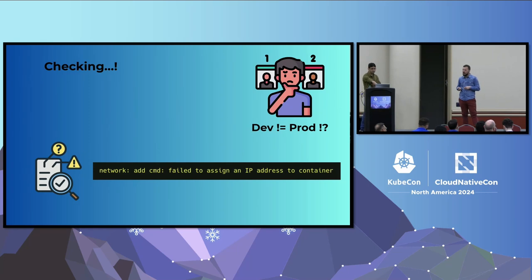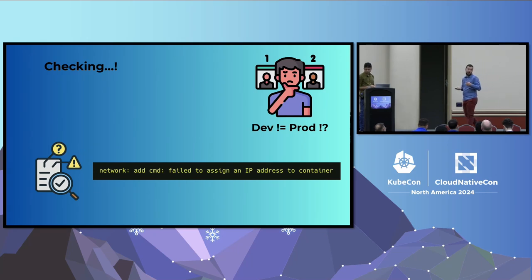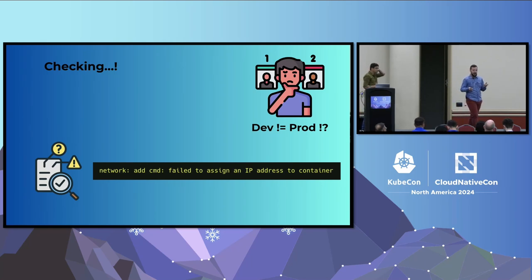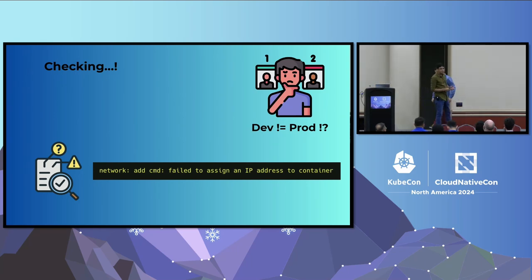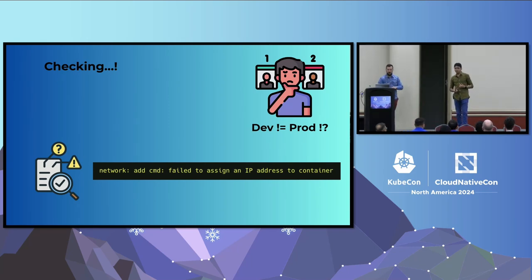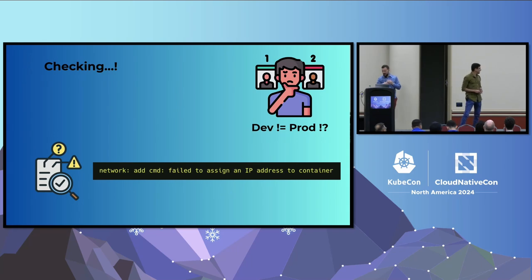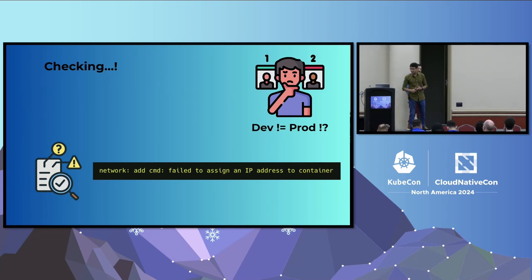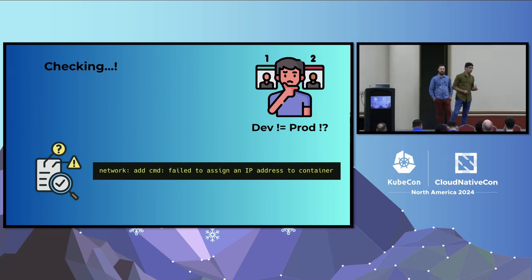Scavenging the logs, we found this message: 'network add command failed to assign IP address to container.' In Kubernetes, the component responsible for giving IP addresses to pods and containers is the CNI — the Container Network Interface. For this case we were using Amazon EKS, and specifically the AWS VPC CNI, which means a strong integration with the cloud. The VPC CNI needs to call cloud APIs such as attach ENI, assign IP address, and so on, because it assigns IPs from inside your VPC subnet.